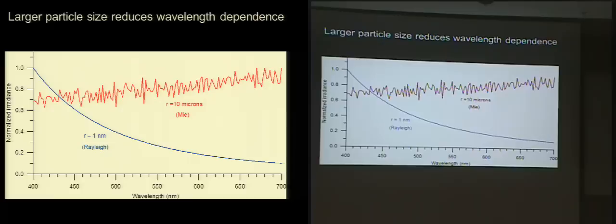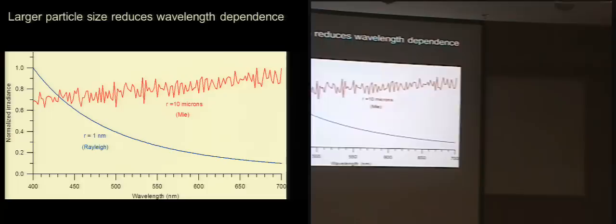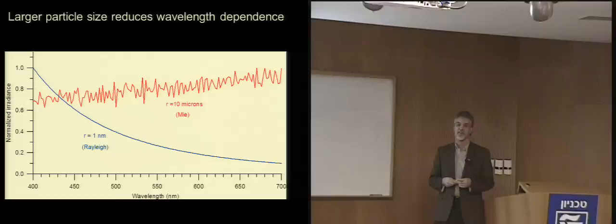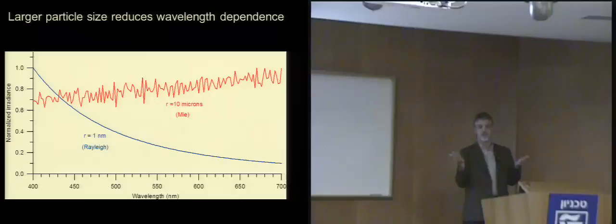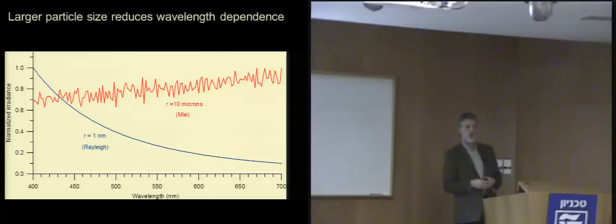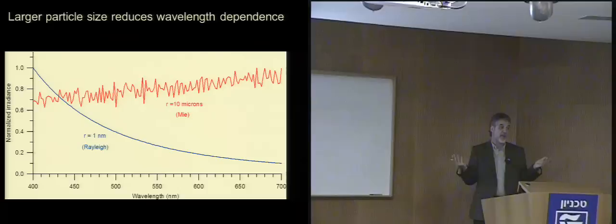The larger particles show either flat or slightly increasing scattering with wavelength — not as steep as Rayleigh particles. So as we increase the content of larger particles in the atmosphere, we start to see a decrease of Rayleigh-type behavior. In other words, we go from having a nice deep blue color perceived by the eye to having something white or gray.